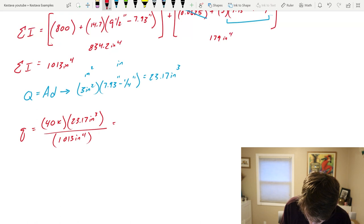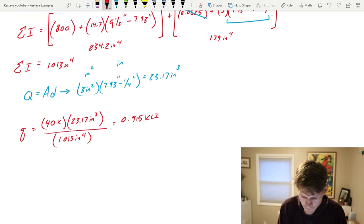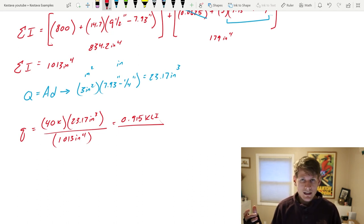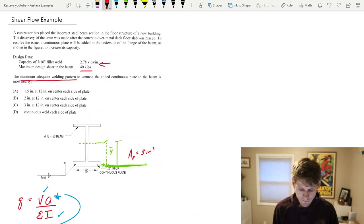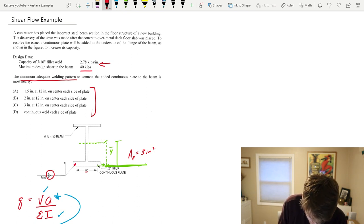Now we have everything so let's solve this thing. We see our units, we have the inches to the fourth on the bottom, inches to the third on the top and then kips. That'll get us 0.915 kips per lineal inch, KLI. We've solved this but the problem's not done, it didn't ask for Q or lowercase q.